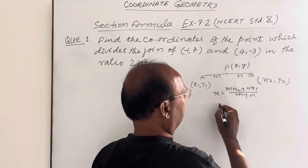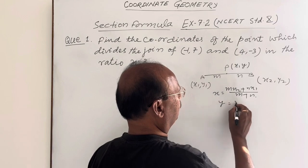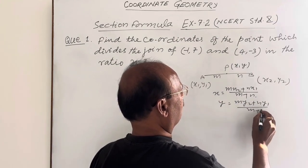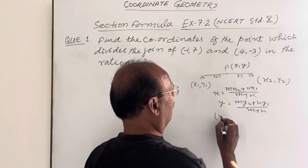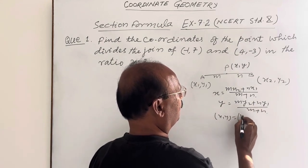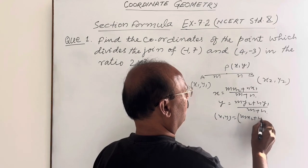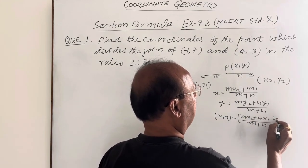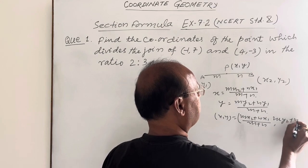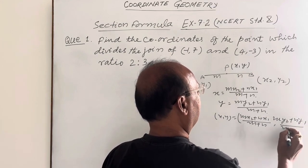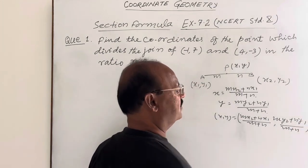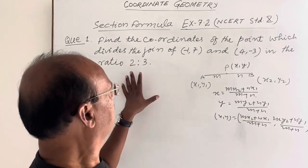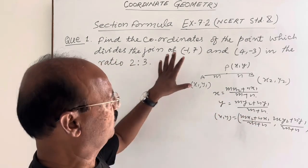And y is (my2 + ny1) divided by (m + n). So (x,y) equals ((mx2 + nx1)/(m + n), (my2 + ny1)/(m + n)). Very interesting, simple formula. So we will apply this formula here to get coordinates of the point which divides the line segment joining these two given points.